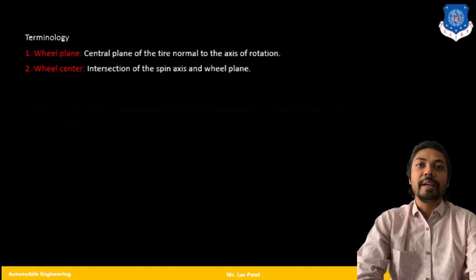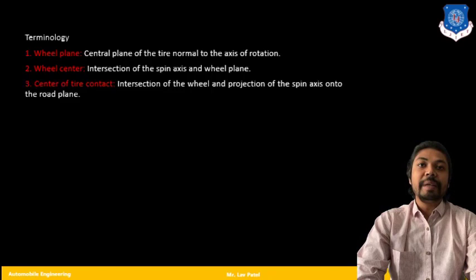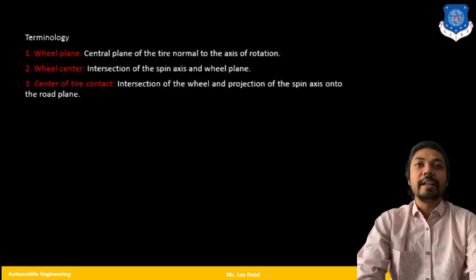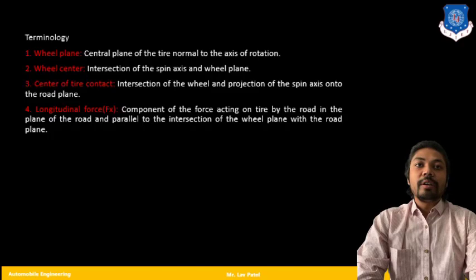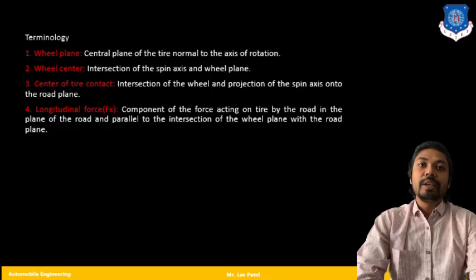Third is the center of tire contact. For that we have intersection of the wheel and the projection of the spin axis on the road plane. Here we are talking about the road plane, so that particular point we can call it as center of tire contact. Fourth is the longitudinal force, called Fx. That is the component of the force acting on tire by the road, in the plane of the road and parallel to the intersection of the wheel plane with the road plane. In the figure you can learn it easily.